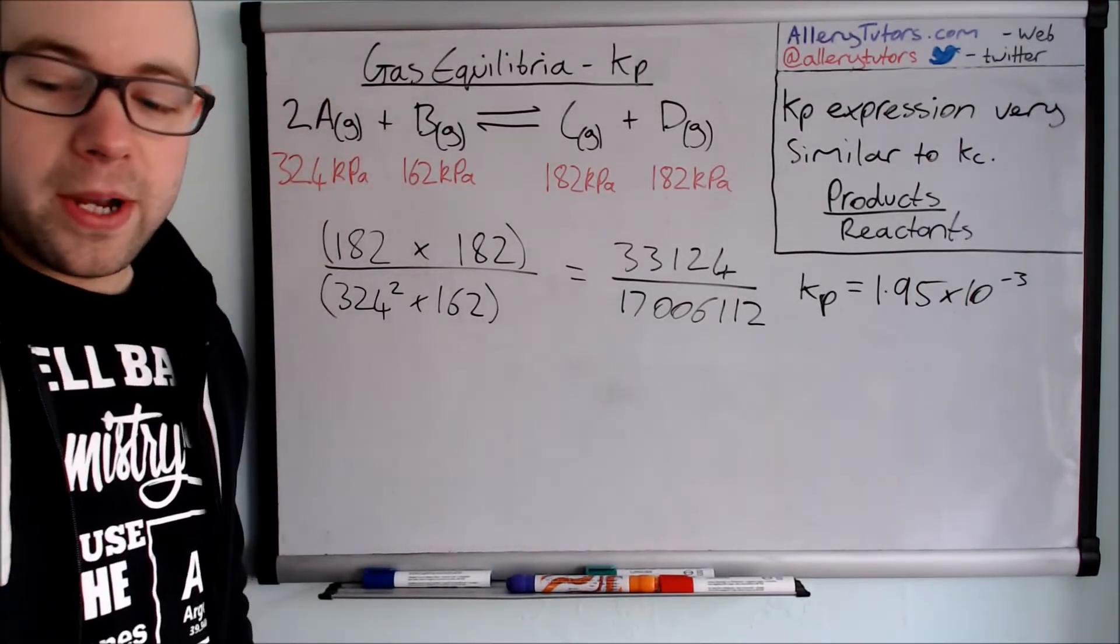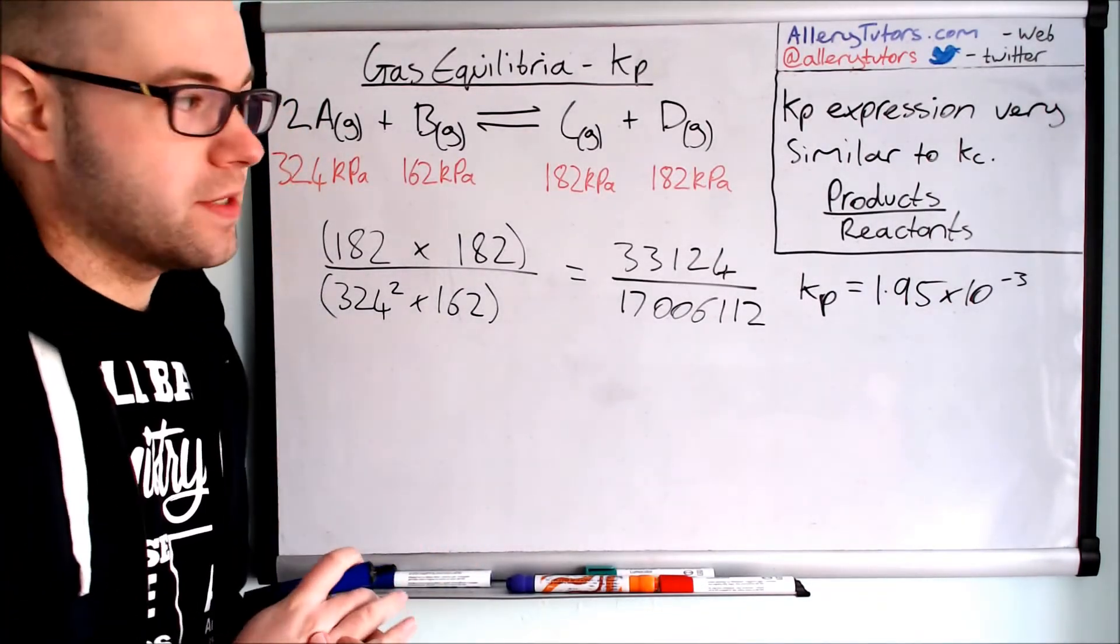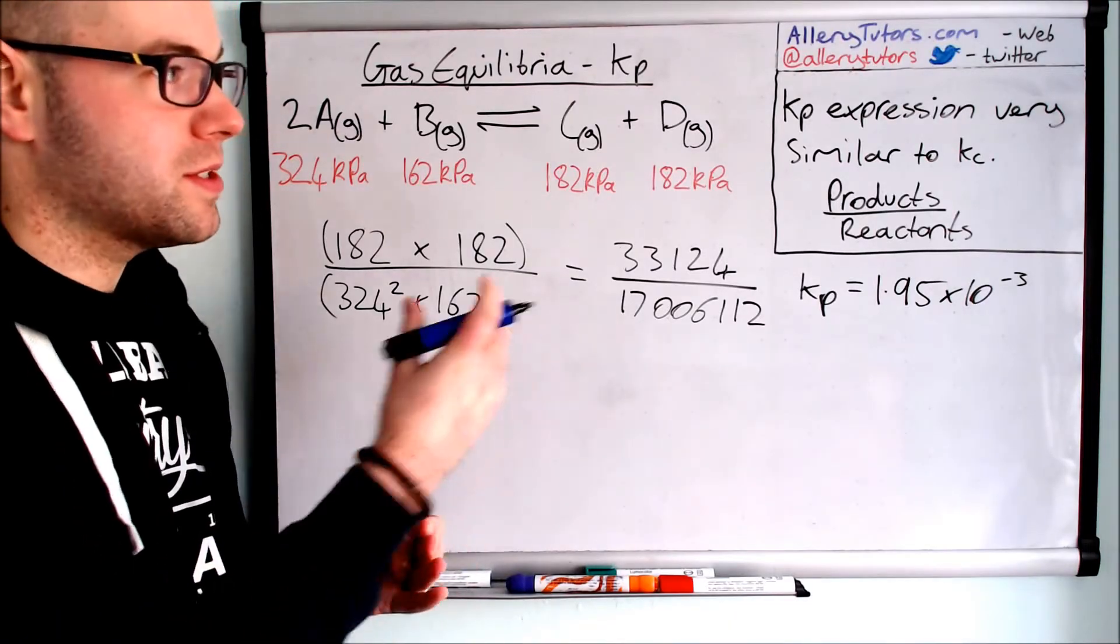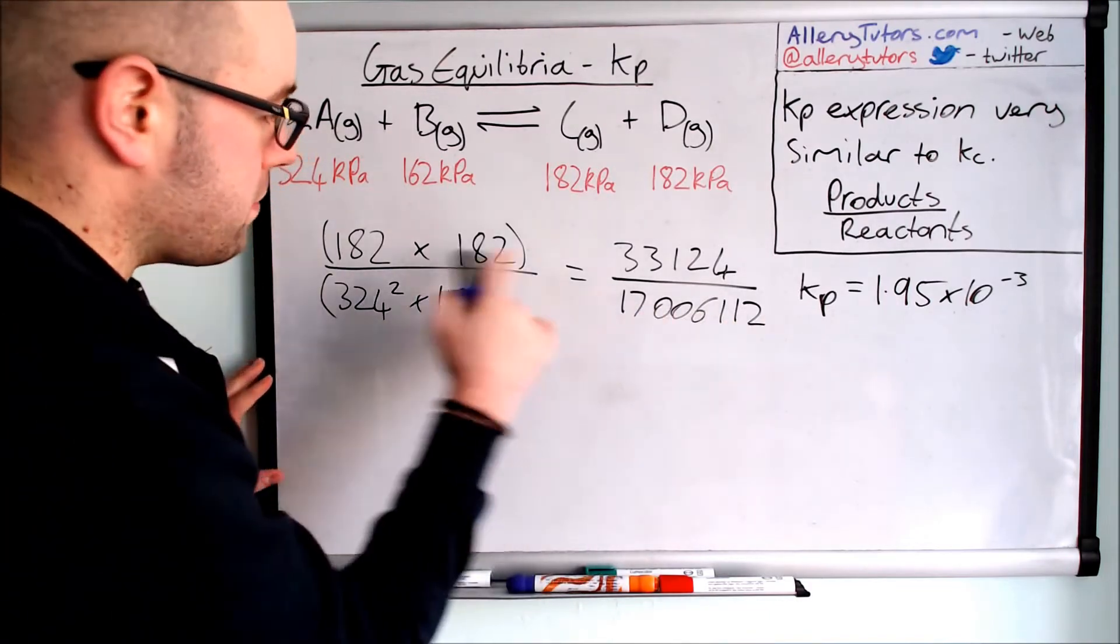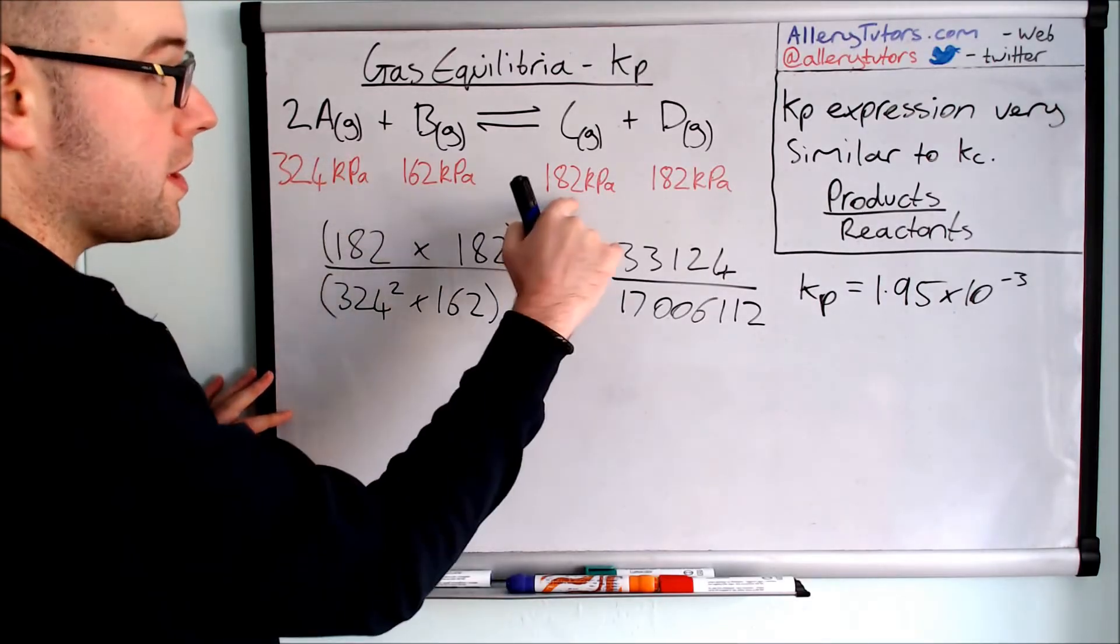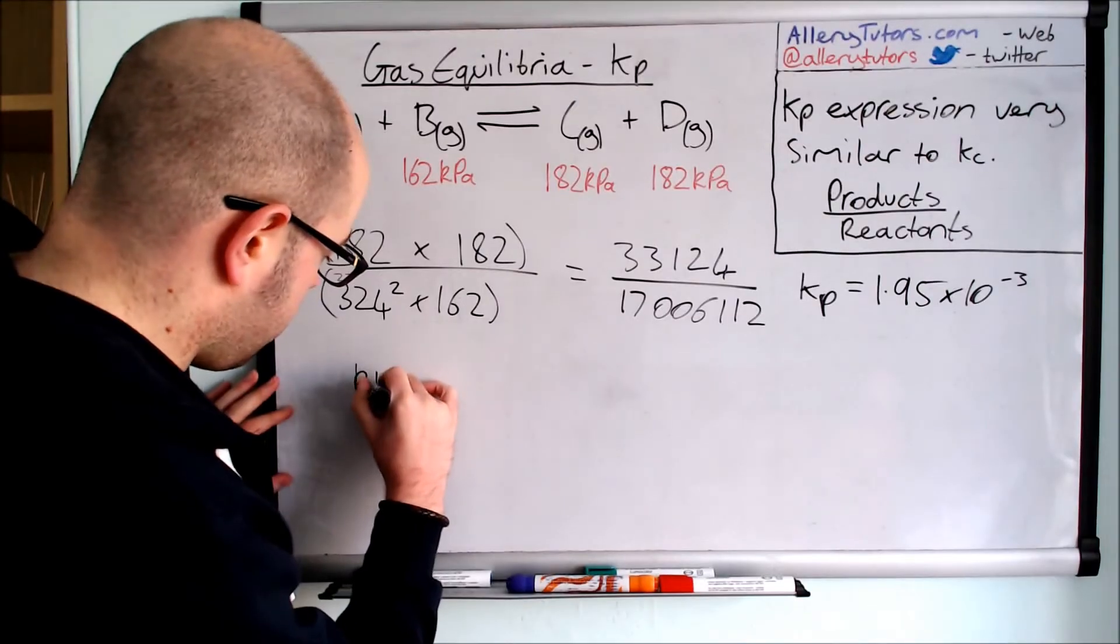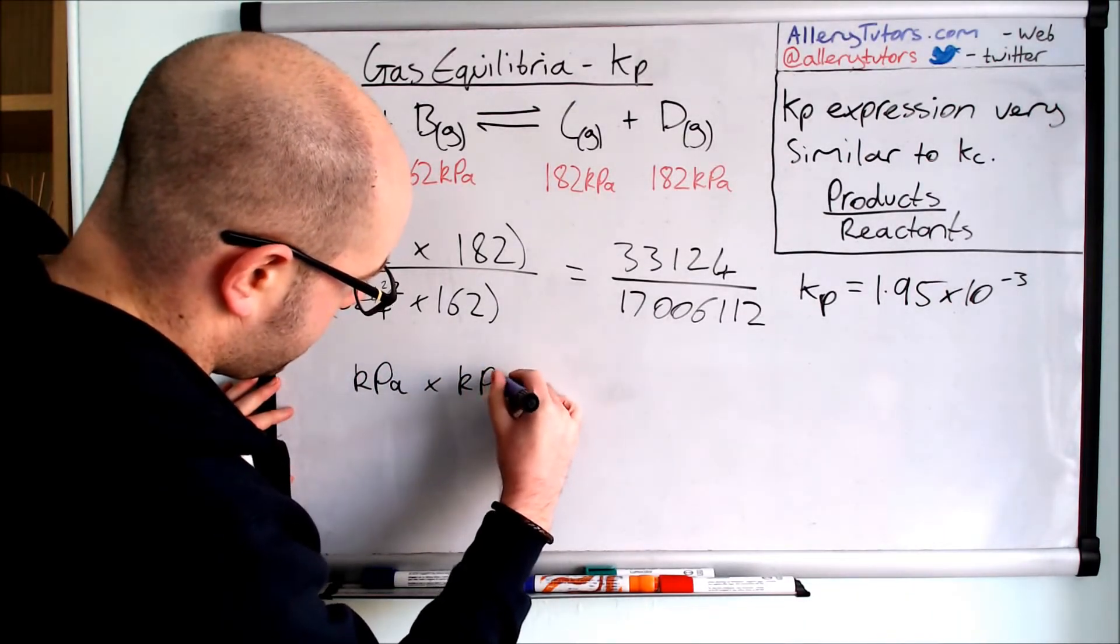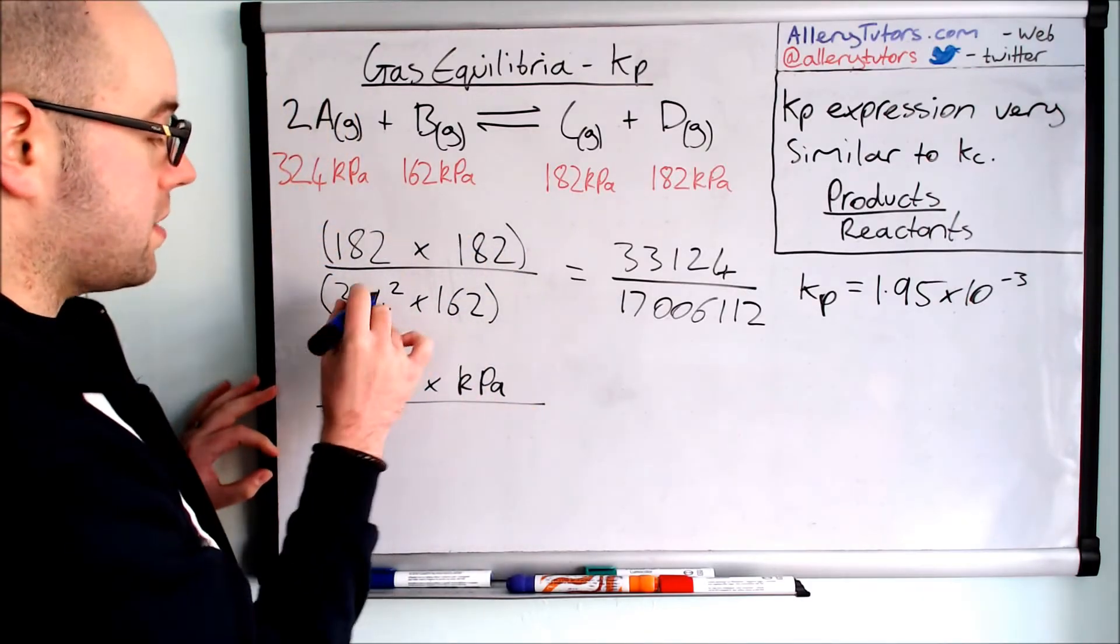So we're going to now look at the units. So we're going to look at the units of this because you get a mark for actually working out the units and again it's very similar to KC. So we're going to write down the units for the top two lines and then the bottom one. So you can see here that we've got one kilopascal there and one kilopascal there. So we're just going to put KPa times by KPa. So that represents the two products that we've produced and we're going to divide that by our reactants.